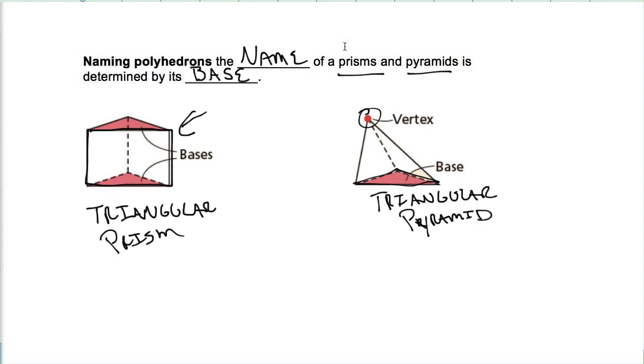If your base happens to be a hexagon, so if we have a regular hexagon, something like this, that's a horrible one, then it would be a hexagonal pyramid or a hexagonal prism. You have two bases. So name the base. That's what the name of the polyhedron is then.